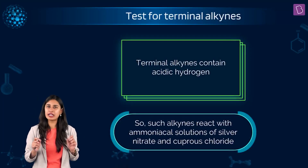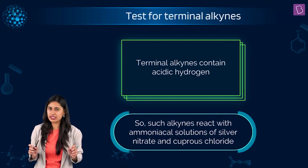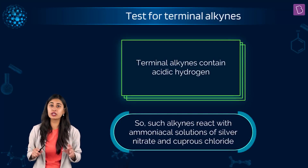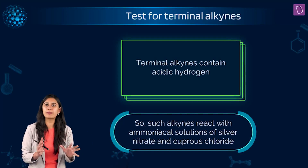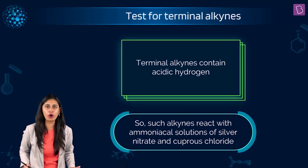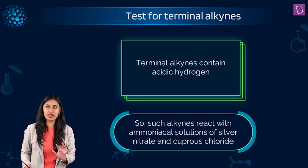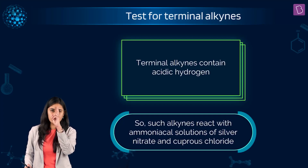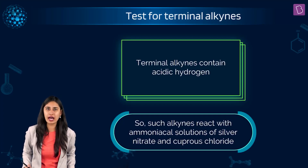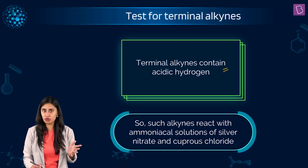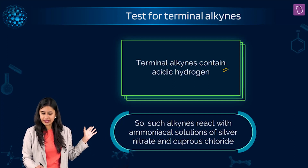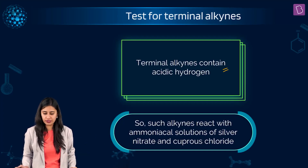Let's understand the very important aspect — the test for the terminal alkyne, which can be asked in one form or another. What is special about terminal alkynes is you should be able to detect them with the naked eye. Terminal alkynes contain acidic hydrogen, and such alkynes react with ammoniacal solutions of silver nitrate and cuprous chloride.